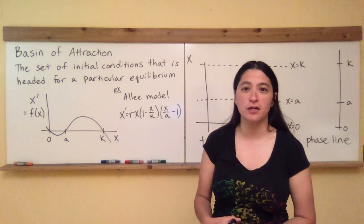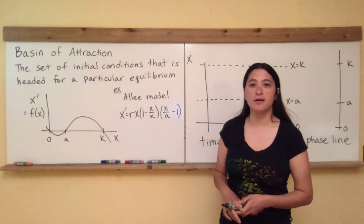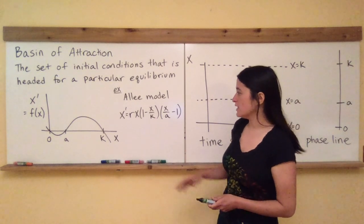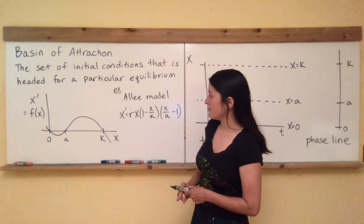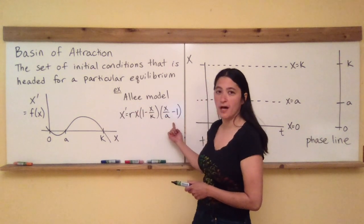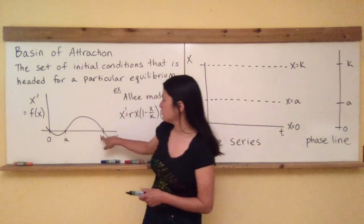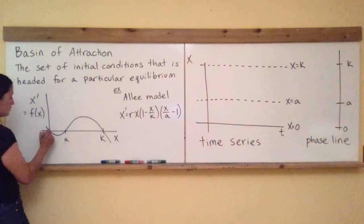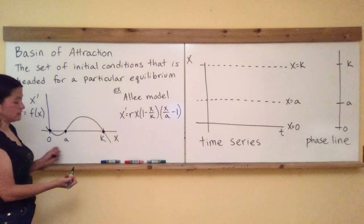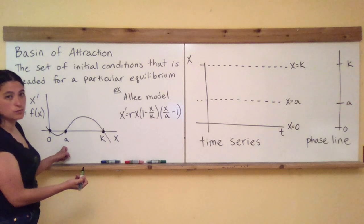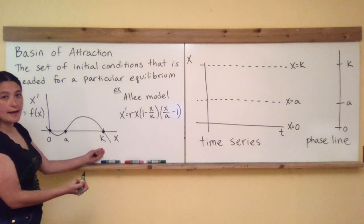A really good way to illustrate the concept of a Basin of Attraction is to use the Ali model. As you recall, the Ali model has three equilibrium points. On a graph of x versus the rate equation x prime, the function intersects the x-axis three times. Since those are the places where x prime equals zero, there are three equilibrium points at zero, a — the threshold at which the Ali effect causes populations to decline instead of increase — and k, the carrying capacity.